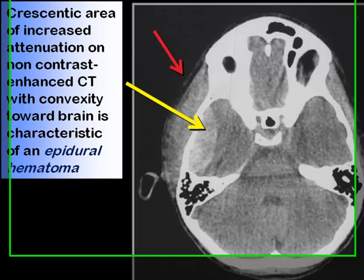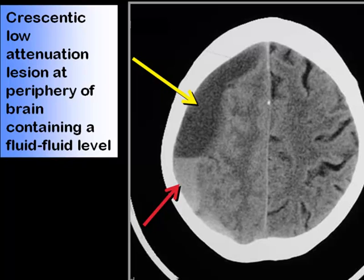In this individual, there is intracranial hemorrhage in the form of a subdural hematoma. There is a crescentic low-attenuation lesion at the periphery of the brain, and it also contains a fluid-fluid level where the heavier blood elements have settled to the dependent portion.